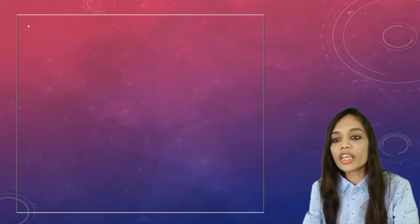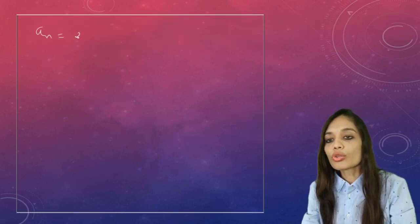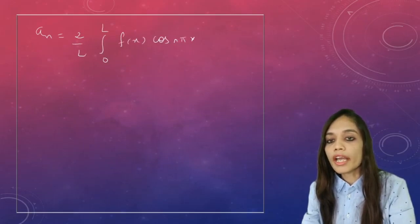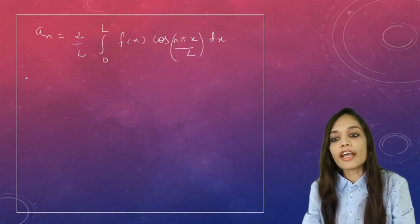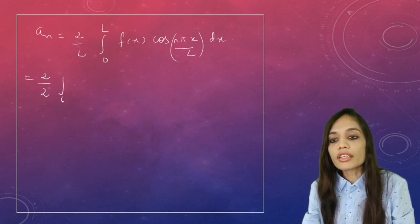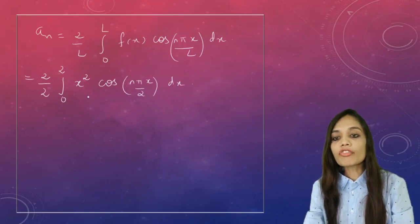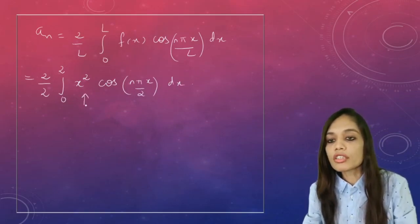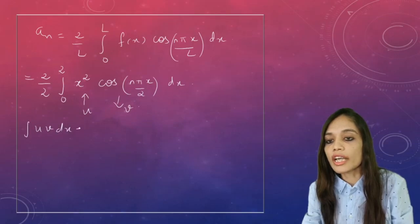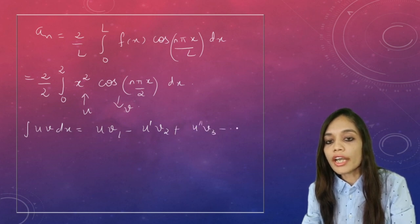Now let us find An. An = (2/L)∫₀ᴸ f(x)cos(nπx/L)dx. Substituting L = 2 and f(x) = x², we get (2/2)∫₀² x²·cos(nπx/2)dx. We will apply the UV rule (Leibniz rule): ∫uv dx = u·v₁ − u'·v₂ + u''·v₃ − ···, where u = x² and v = cos(nπx/2).